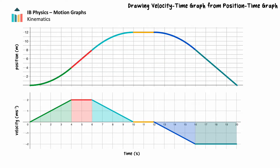Let's explore how we can calculate an object's displacement from a velocity-time graph when the object's motion changes. Here we have corresponding position-time and velocity-time graphs for several consecutive types of motion. The values on the horizontal axis for the velocity-time graph also apply to the horizontal axis of the position-time graph. For both graphs, each time the motion changes, the color of the journey segment changes.